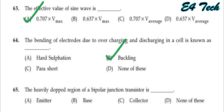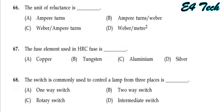The heavily doped region of a bipolar junction transistor (BJT) is the emitter. Option A.